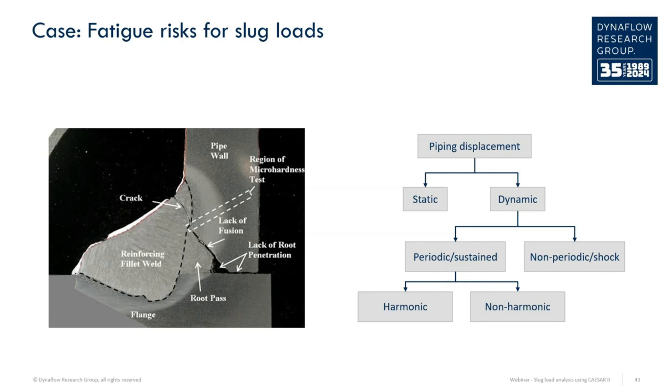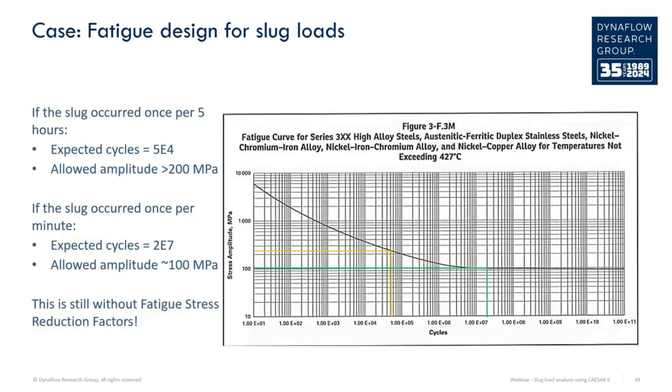Slugs, however, can occur much more frequently, and then fatigue is a very valid concern. If we look at the fatigue curve for the material from the example, we see that for a load once every 5 hours we get about 50,000 cycles, and an allowable stress range of more than 200 MPa. This is without taking imperfections and welds into account, but if we apply for example an FSRF, or fatigue stress reduction factor of 2, we get an allowable of more than 100 MPa still.